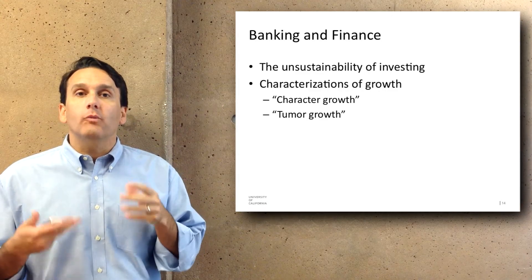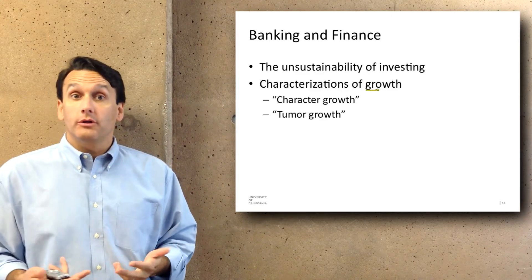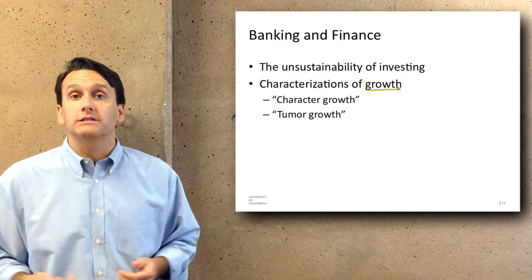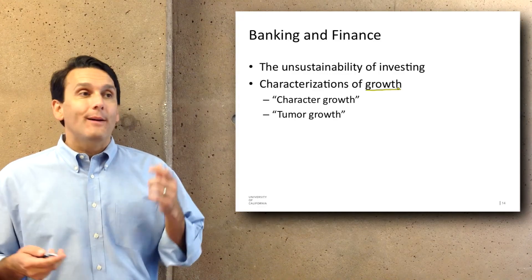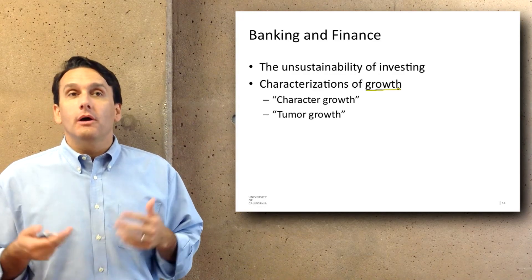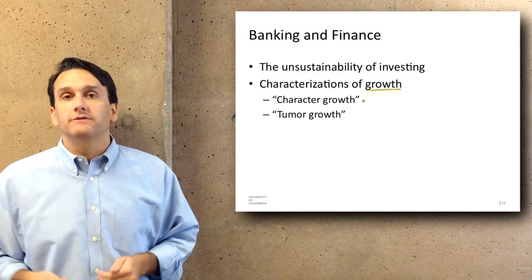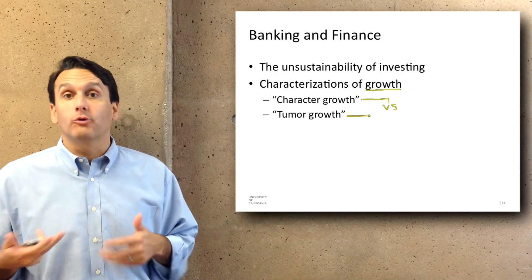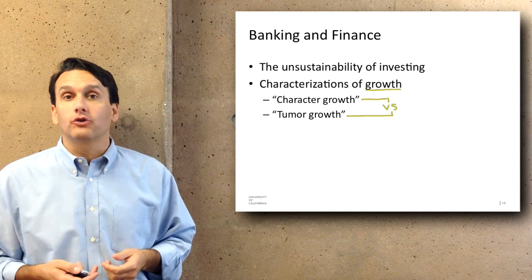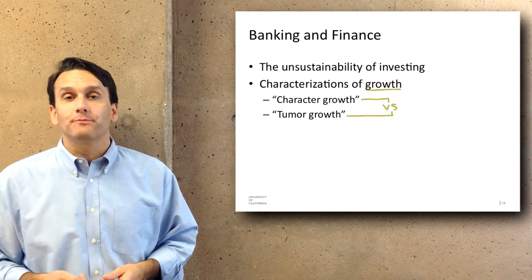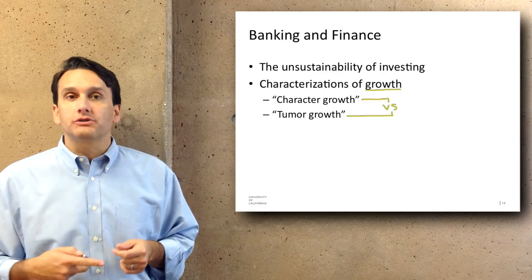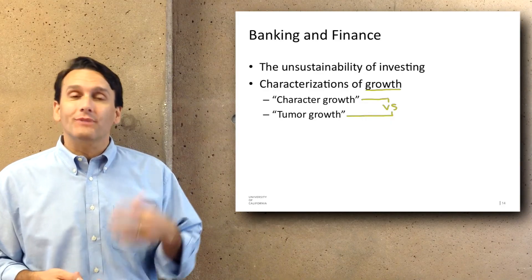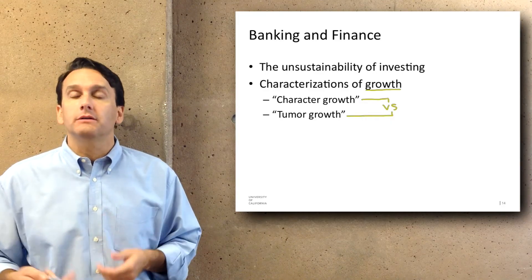This causes me to think about two different ways you could characterize growth, because industrial civilization is often based on growth as an explicit policy goal for most industrial countries. I'd like to distinguish two different kinds: there's growth as in character growth, where you become better as a person. And then there's growth as in tumor growth, where something grows at an uncontrollable rate and ultimately does damage. I fear right now that the growth of industrial civilizations is more like tumor growth, and what we need is something more like character growth.